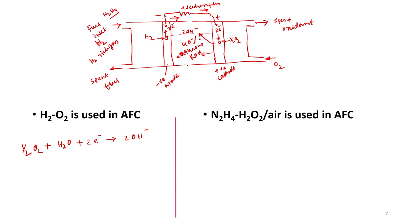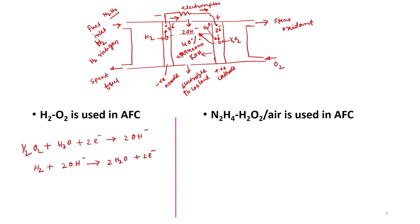A coolant channel can be kept for electrolyte cooling. The overall electrochemical reaction at the anode produces water and electrons, and the overall cell reaction is H₂ + ½O₂ → H₂O.